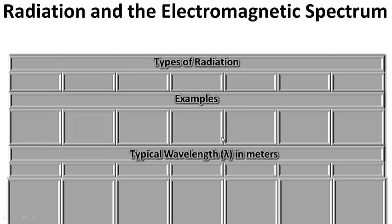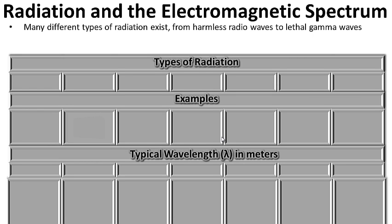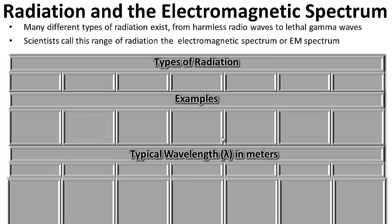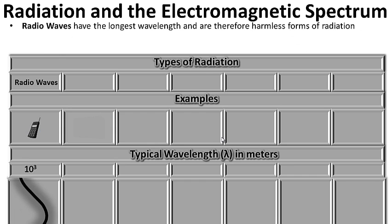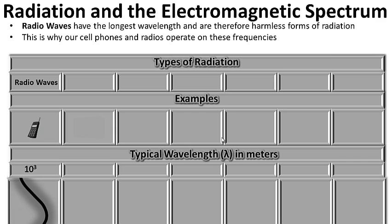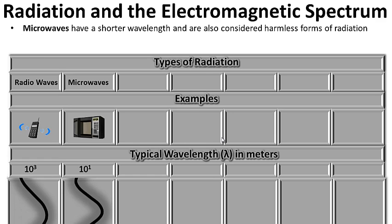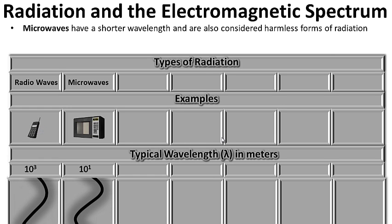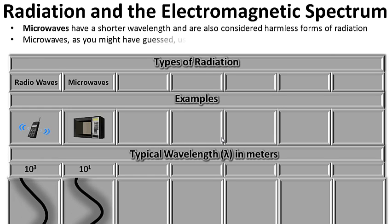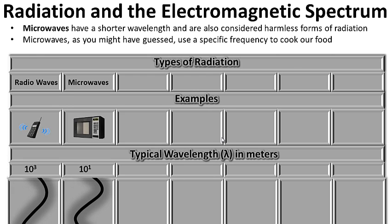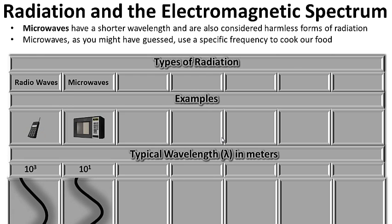Radiation in the electromagnetic spectrum. Many different types of radiation exist, from harmless radio waves to lethal gamma waves. Scientists call this range of radiation the electromagnetic spectrum, or EM spectrum. Radio waves have the longest wavelength and are therefore harmless forms of radiation — this is why our cell phones and radios operate on these frequencies. Microwaves have a shorter wavelength and are also considered harmless; your microwave uses a specific frequency to cook our food.